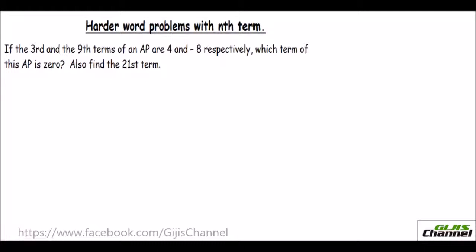Hello everybody, this is Vasyl from At Home. Let's do a few more word problems using the nth term of an AP — harder problems, a little twisted. If the third and the ninth term of an AP are 4 and -8 respectively, which term of this AP is zero? To find which term, we use the nth term formula, but first we need to find the first term and the common difference.